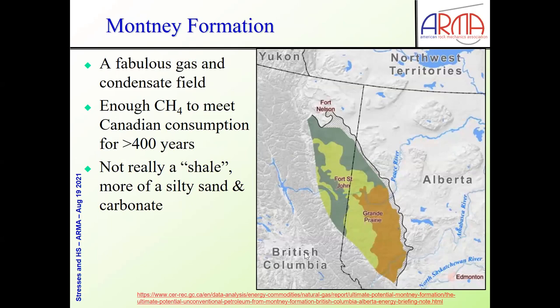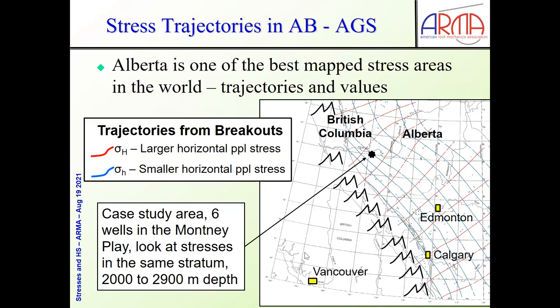The Montney Formation is pretty fabulous. I'm not sure we're going to be using natural gas a hundred years from now, but this formation alone has enough methane in it with current technology to meet Canadian consumption for over 400 years. It's not really a shale — it's more of a silty sand and carbonate. But in order to drill horizontal wells and then do stimulation, companies want to have stress data. Fortunately, Alberta and the Western Canada sedimentary basin is the best-mapped stress area in the entire world, except for the San Andreas fault.